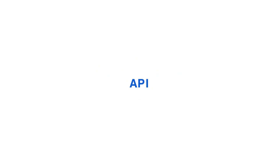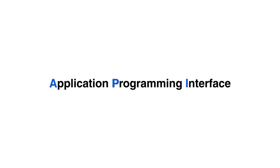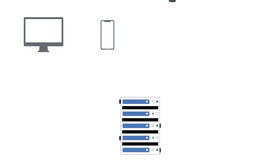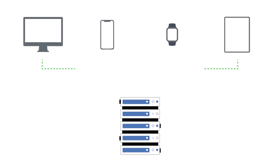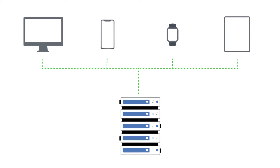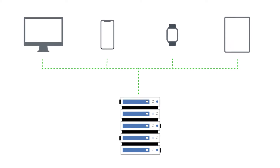An API, also known as an Application Programming Interface, is a software intermediary that allows applications to interact with each other, thus simplifying communication between two services.